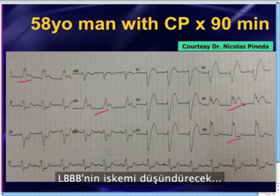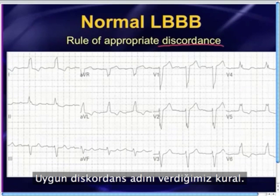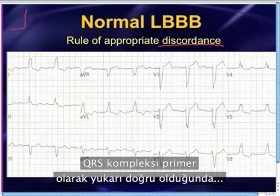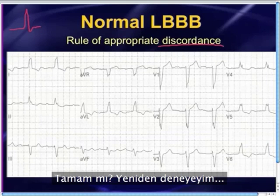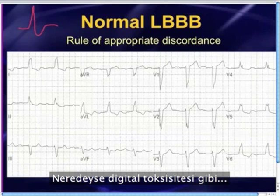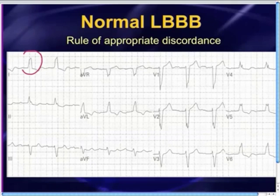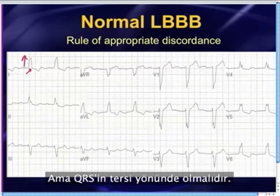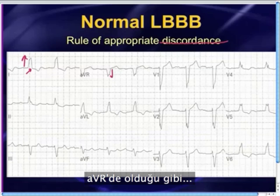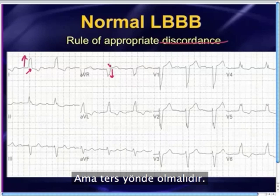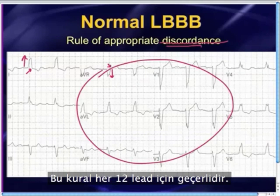One of the other important findings of a left bundle relating to ischemia is what we refer to as the rule of appropriate discordance. Every time the QRS complex primarily goes up, the J point and ST segment should be below the baseline. Every time the QRS complex goes down — for example in lead AVR — the J point or ST segment should be a little bit elevated. Isoelectric is okay, but it should be in the opposite direction — discordant. And that applies for all 12 leads.